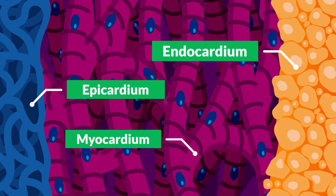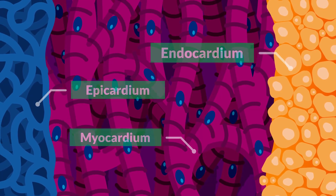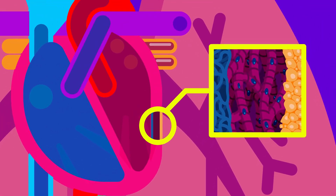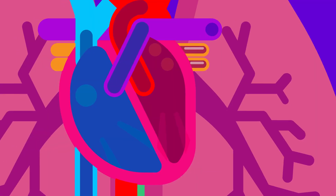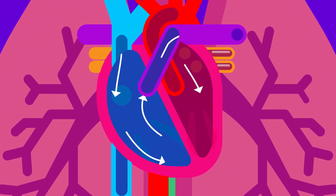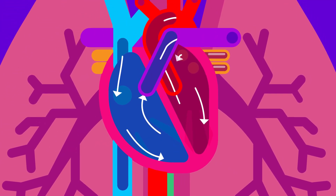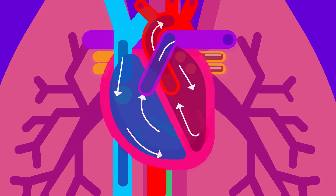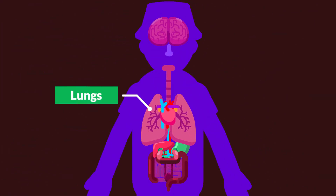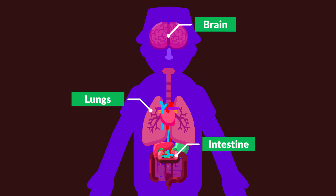A tissue is a group of similar cells that performs one function. Several tissues work together and form an organ. In the heart organ, for example, cardiac muscle tissues and connective tissues give the heart its ability to pump blood and keep its structural integrity. The lungs, brain, and intestines are among a few of the organs found in our body.